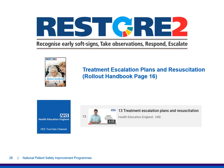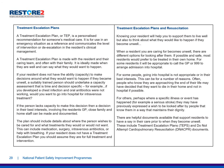Treatment escalation plans and resuscitation are covered in the handbook on page 16 and in video number 13. A treatment escalation plan is a personalised recommendation for someone's medical care, for use in an emergency situation as a reference. It communicates the level of intervention or de-escalation in the resident's clinical management, and is made with the resident, their caring team and often their family — ideally when they are well and can say what they would want to happen. When a resident becomes unwell, there are different options for looking after them; if possible and safe, most residents would prefer to be treated in their own home.